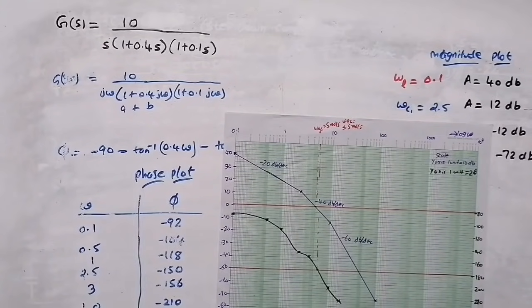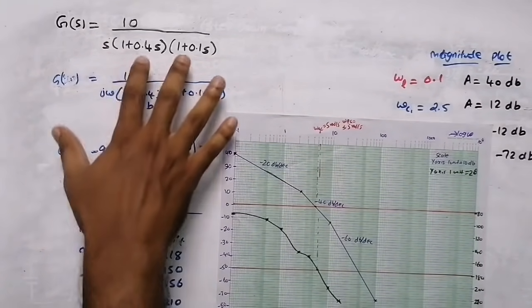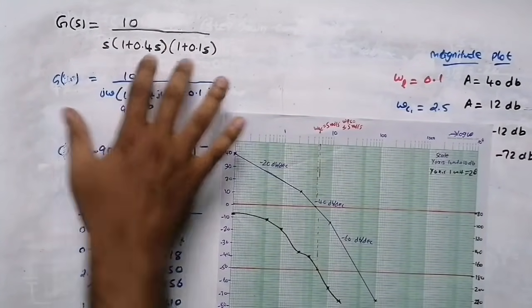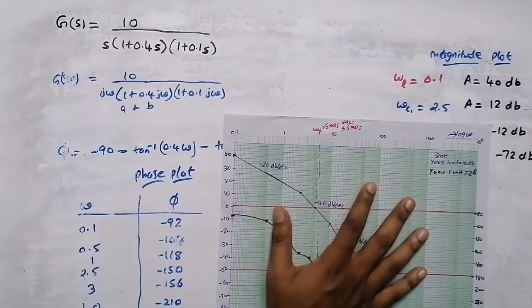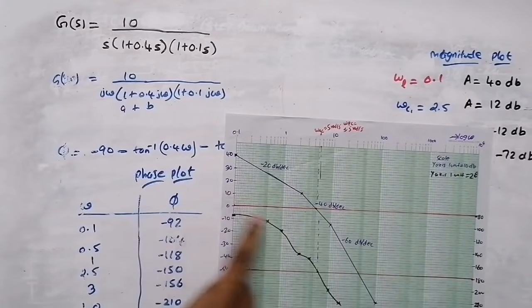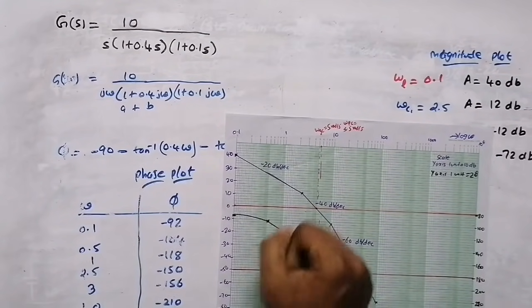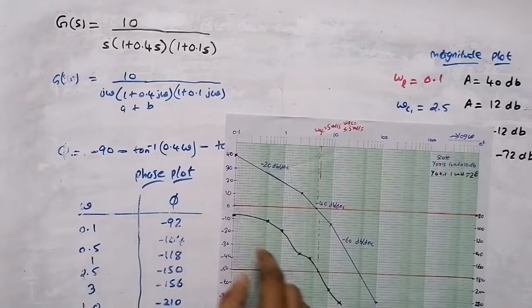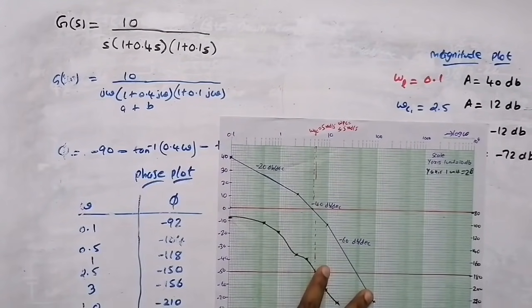In this video we are going to sketch the Bode plot of a system on a semi-log graph by plotting the magnitude plot and phase plot, and also finding the gain crossover frequency and phase crossover frequency.